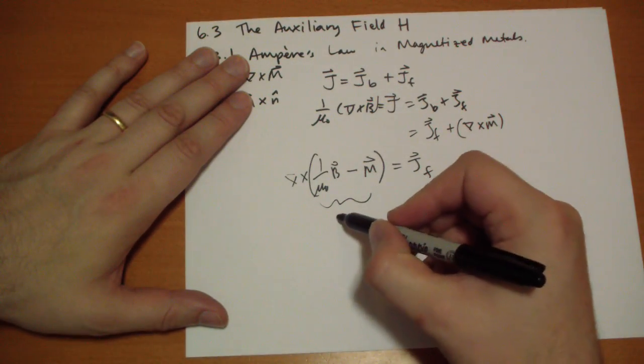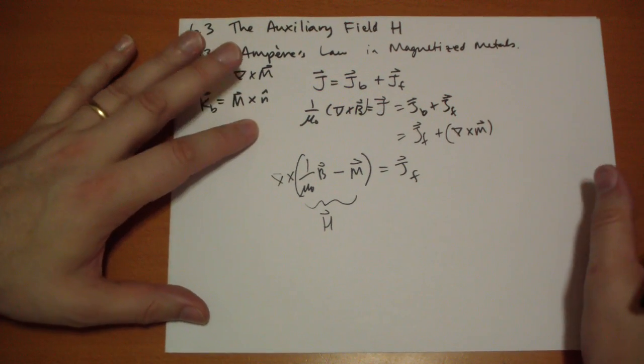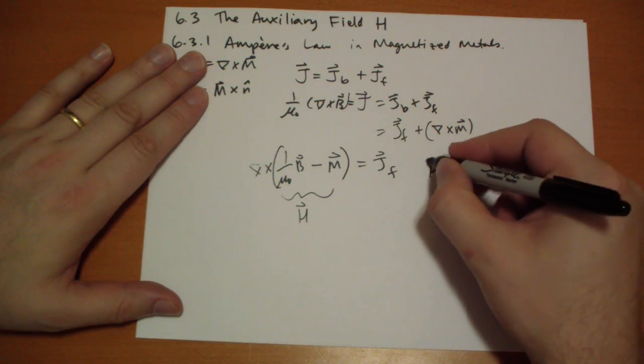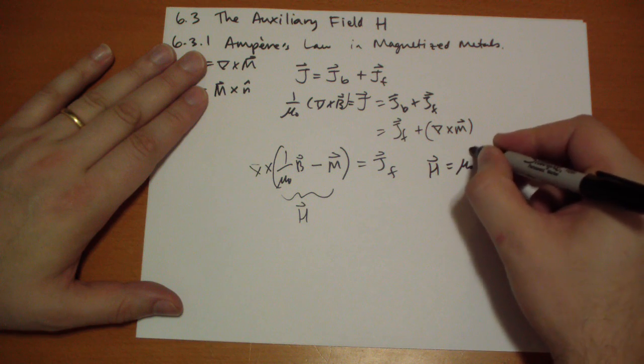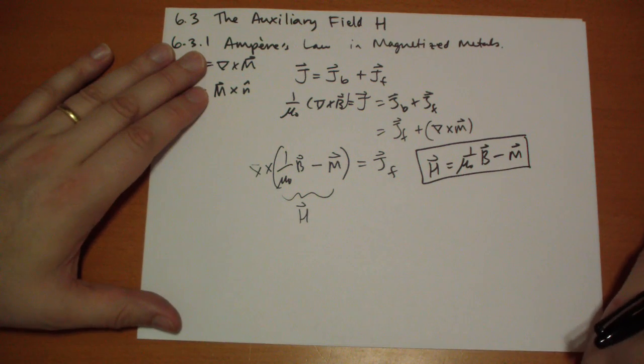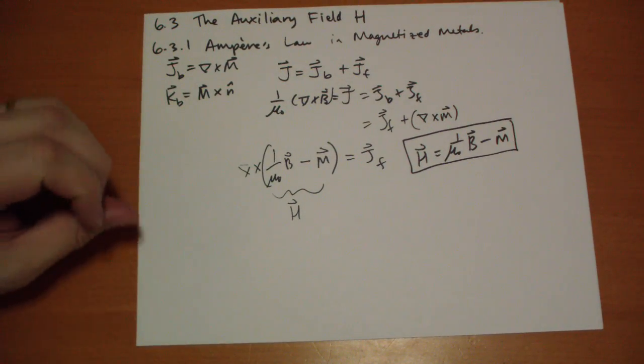This value is the auxiliary magnetic field called H. We can define that as 1 over mu naught, B vector, minus M vector. That's H. Memorize it. Don't forget it.